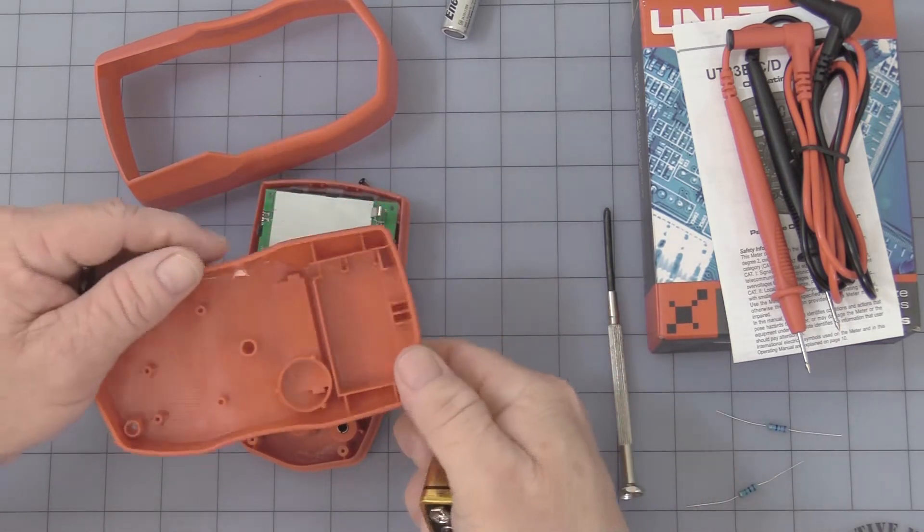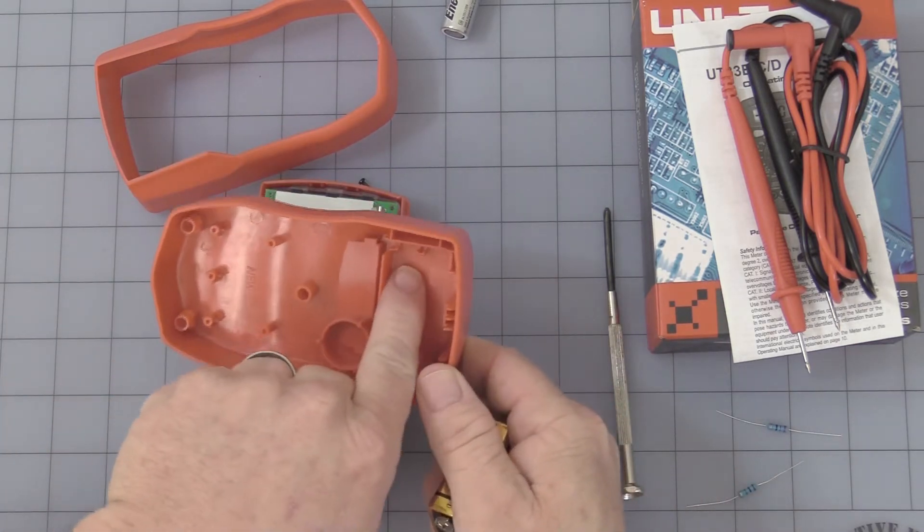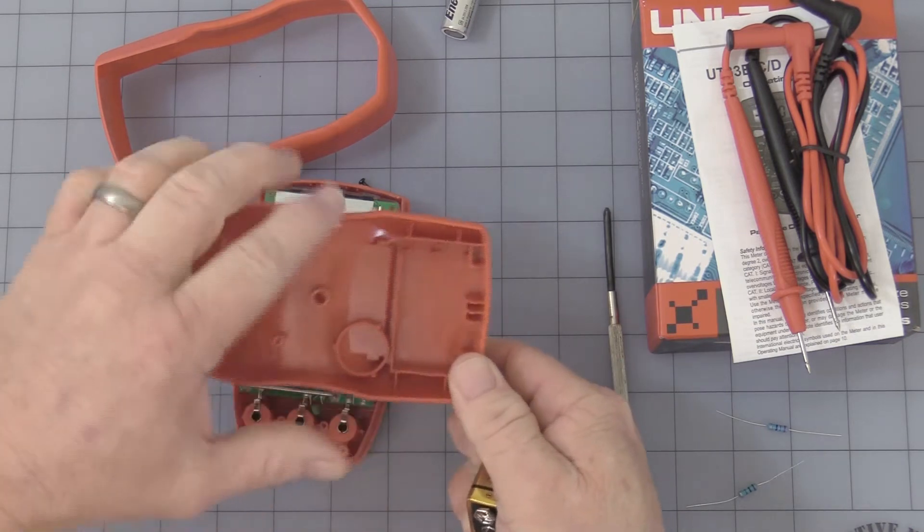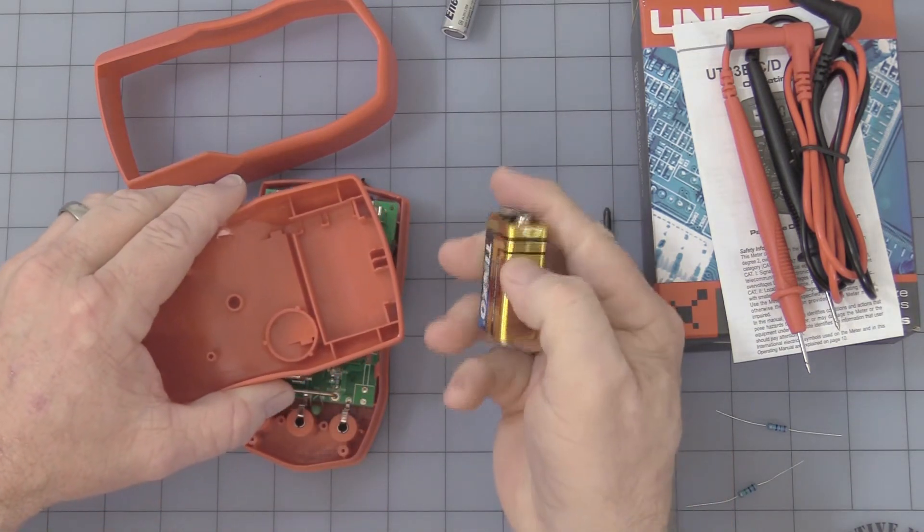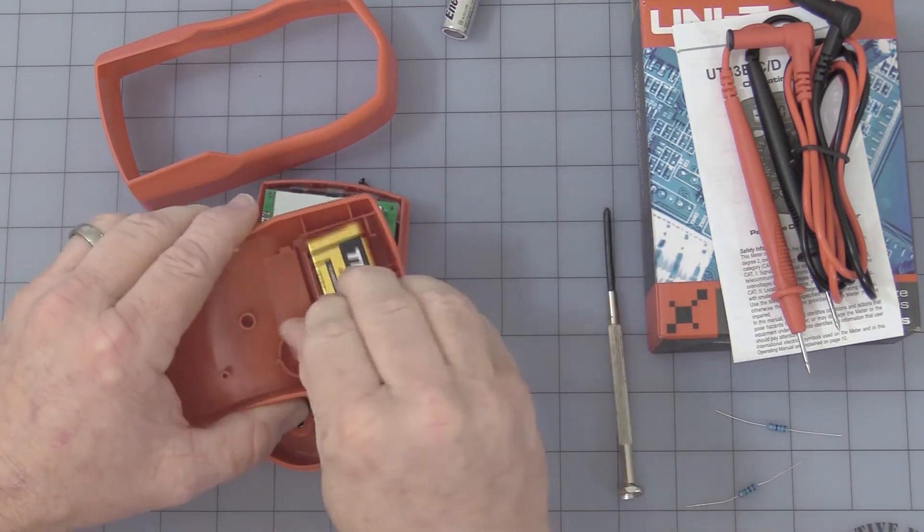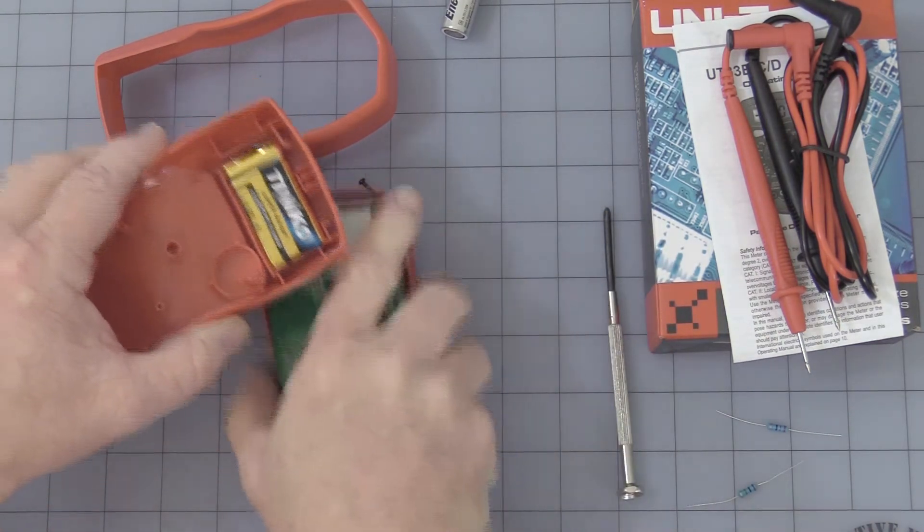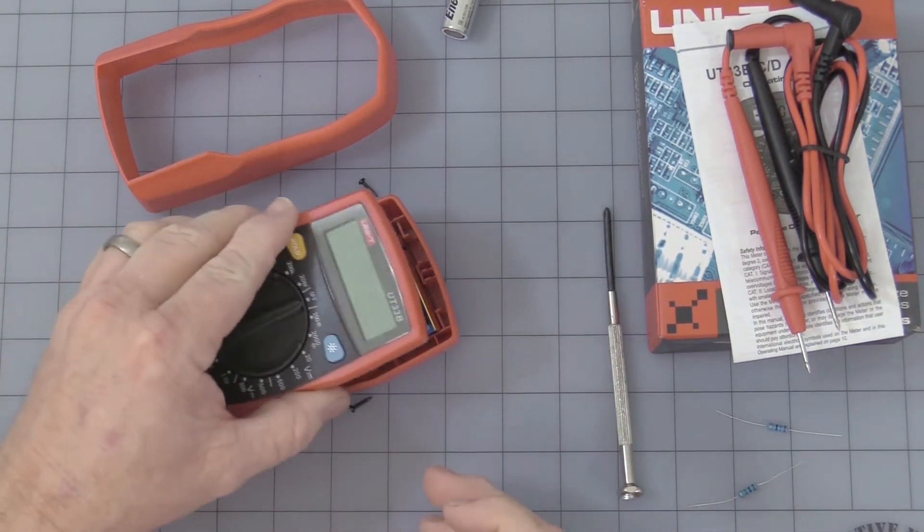Right off the bat, you can hopefully see in here there is a plus and a minus to tell you which way the battery goes in. Notice the plus on the battery itself, so it holds it in place, and you just simply put the cover back on.